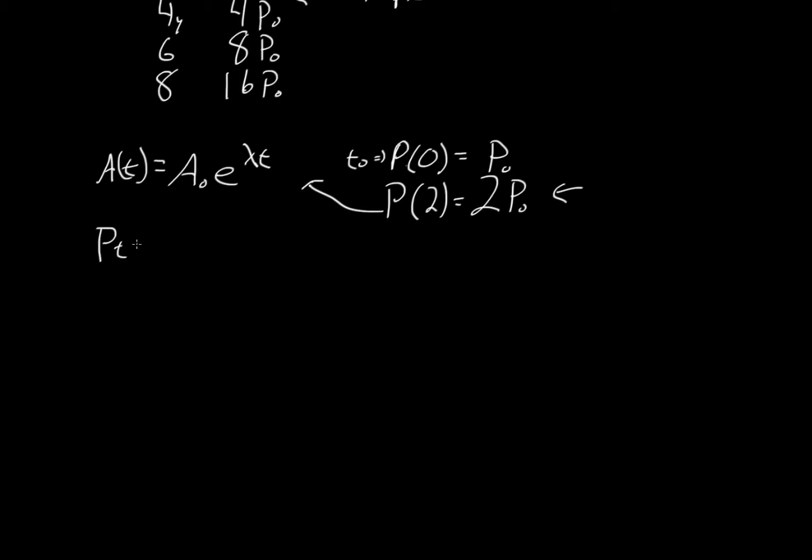So p of t is going to equal p-naught e to the lambda t. Well, we know what happens at t equals two years. So you get p of two years equals p-naught times e to the lambda times two. Well, we know p of two years happens to be two times p-naught, which equals p-naught e to the lambda 2. That will cancel out. Therefore, we have two equal to e to the 2 lambda.